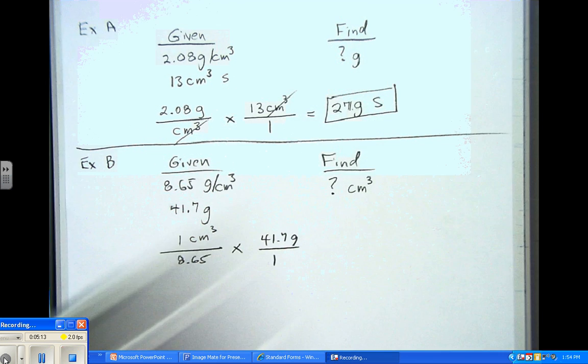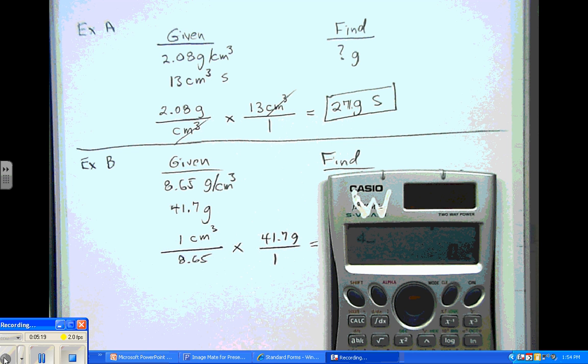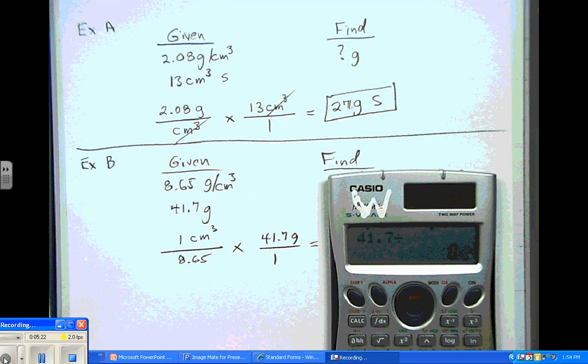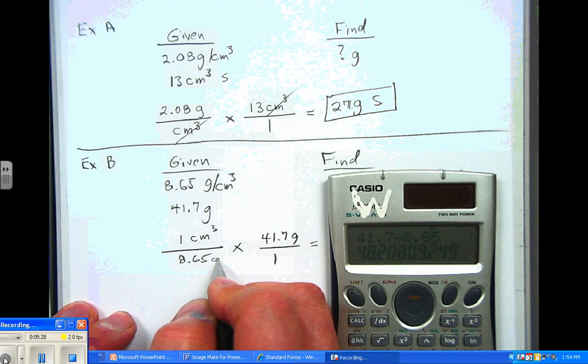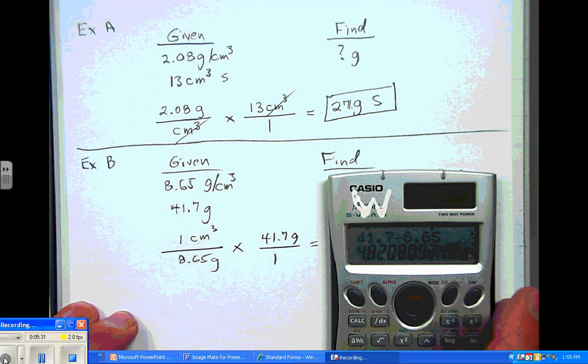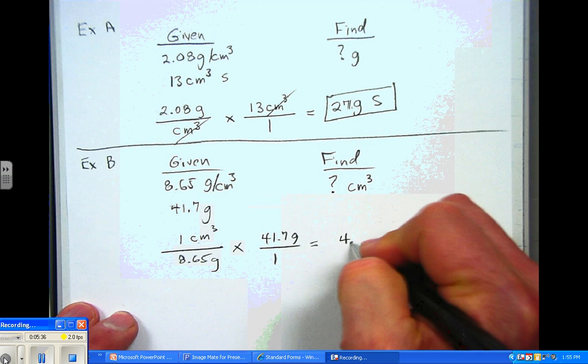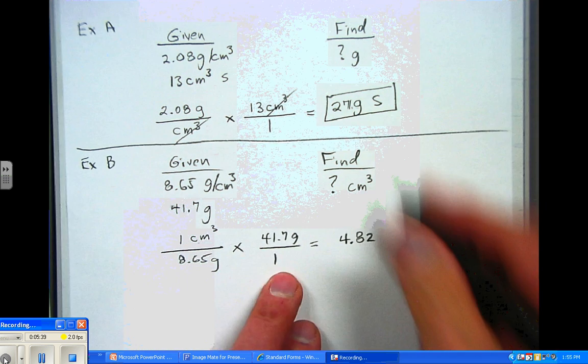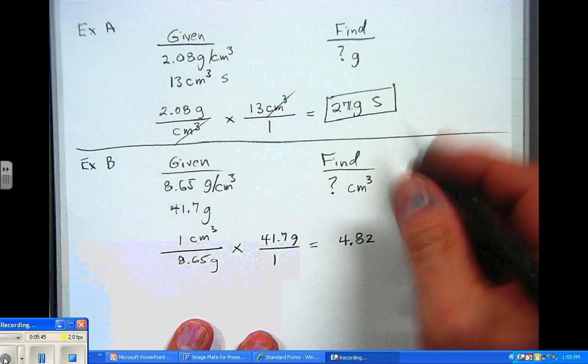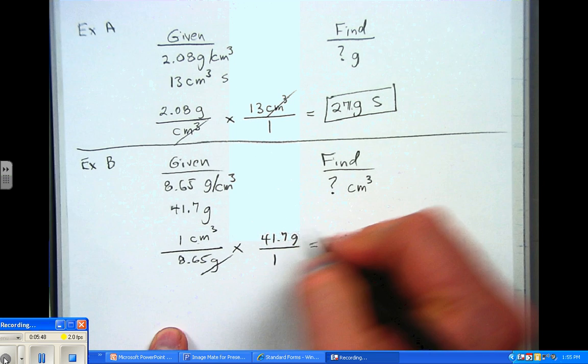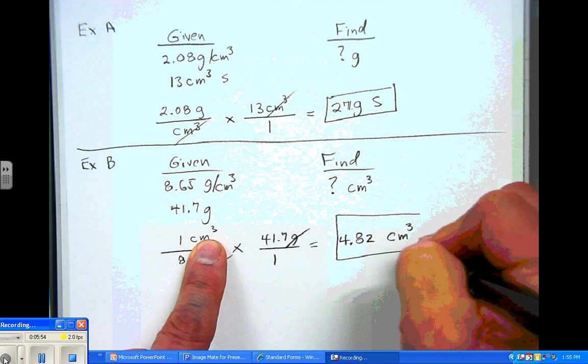And now you can see we have a division problem. So we simply take our calculator, 41.7 divided by 8.65. And by the way, that 8.65 is grams. So we get 4.82 on the calculator. 4.82. And again, tomorrow, or in the lesson very shortly, we'll understand more about sig figs, and I'll be able to show you then. But this now is going to cancel grams, and we wind up with cubic centimeters as our unit of measure. And that's what we want for that guy.